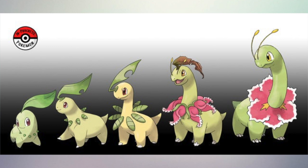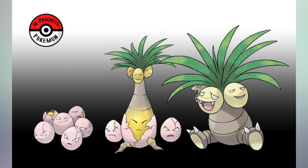Number 11, five evolutions: between Chikorita and Bayleef, and Bayleef and Meganium. I like Chikorita's evolution line, but I don't really see these pictures as necessary because Chikorita's evolution line is fine as it is. The one between Chikorita and Bayleef doesn't look that much different from Bayleef, and the one between Bayleef and Meganium also doesn't look that much different from Meganium.